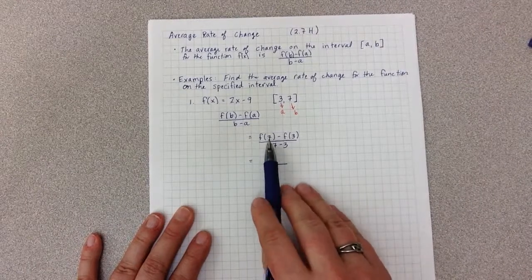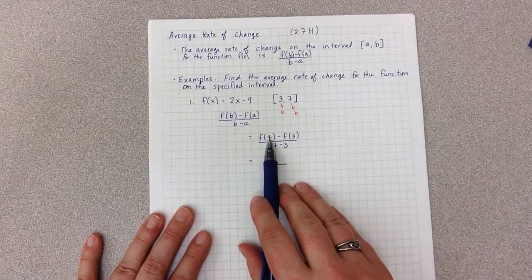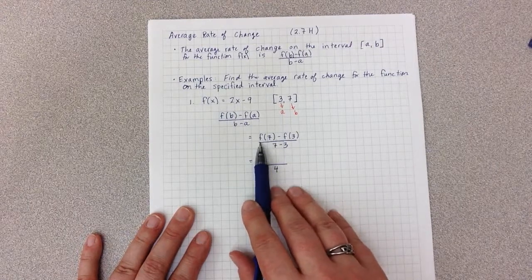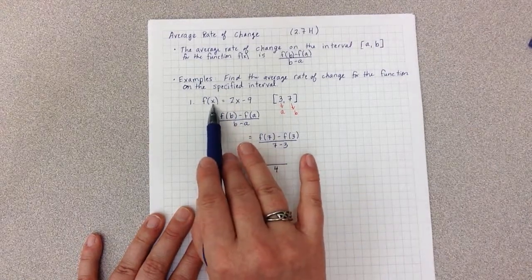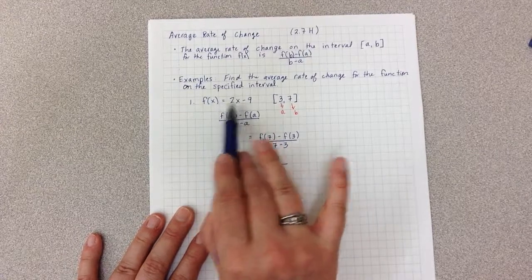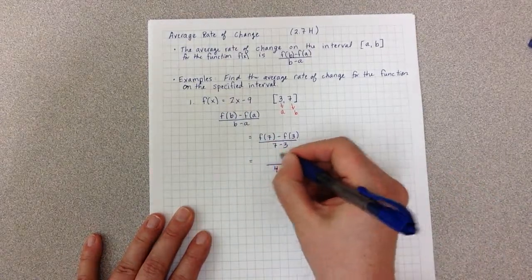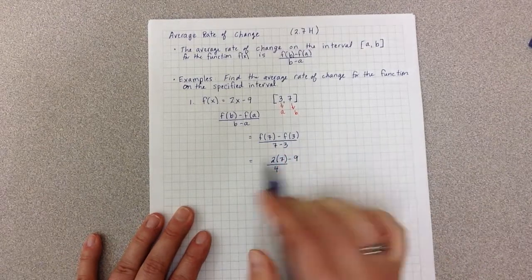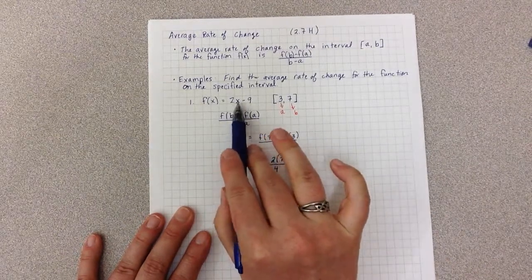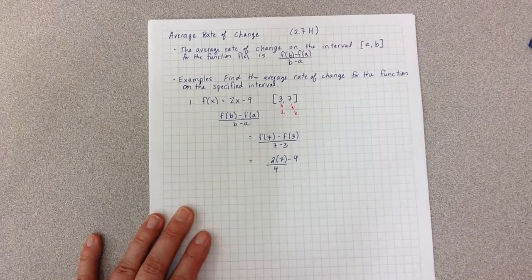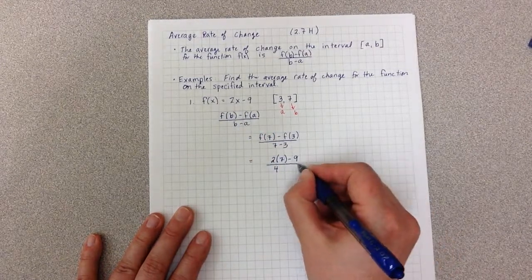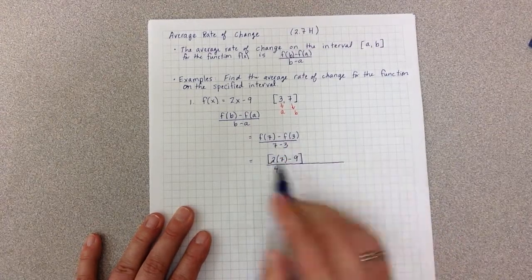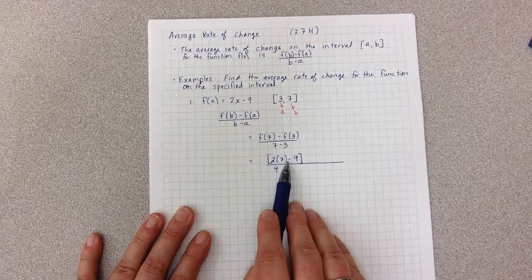The numerator is going to be a little bit more complicated because it requires me to actually find f(7). You'll remember that finding f(7) means I'm plugging 7 in for the x. So I'm going to have 2 times 7 minus 9. That's happening right here. I'm going to put big brackets around that so that I can very clearly see that that is my first piece. That's my f(7).